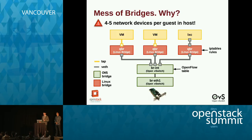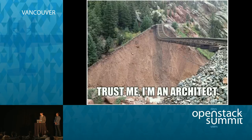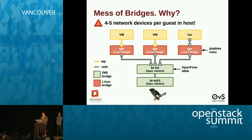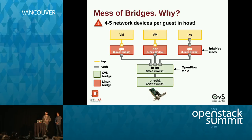On top of all this, there's a tap interface or an extra VETH depending on what you're attaching to these bridges, which connects the VM to the Linux bridge. So for each VM you create, you're going to create four to five network devices. You may ask why — the answer is security groups. Security groups in Neutron provide port-level security, meaning filtering rules are brought as close as possible to the virtual machine itself, using IP table rules in the Linux bridges and OpenFlow rules in the integration bridge for tenant isolation.